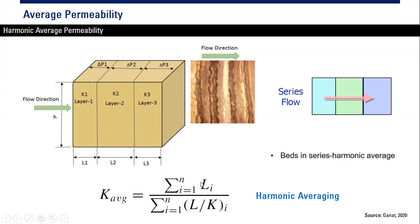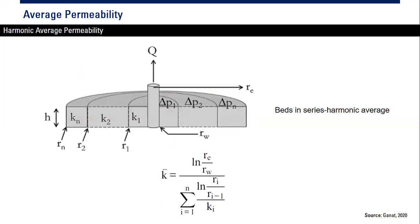At the numerator we have l1 + l2 + l3, and for the denominator we add l1/k1 + l2/k2 + l3/k3, then we divide to get the harmonic average permeability. This is harmonic averaging for beds in series.